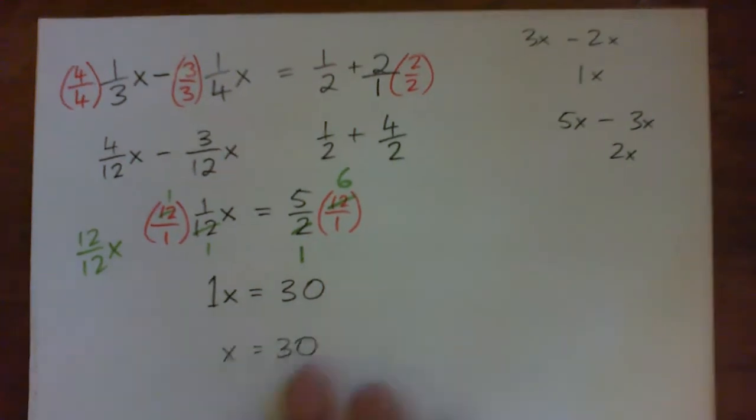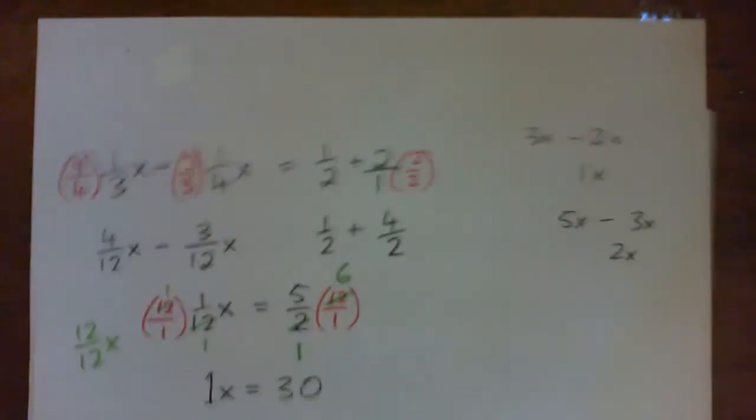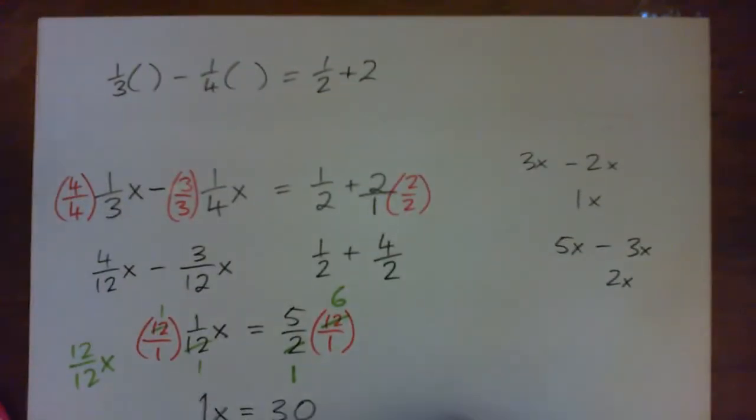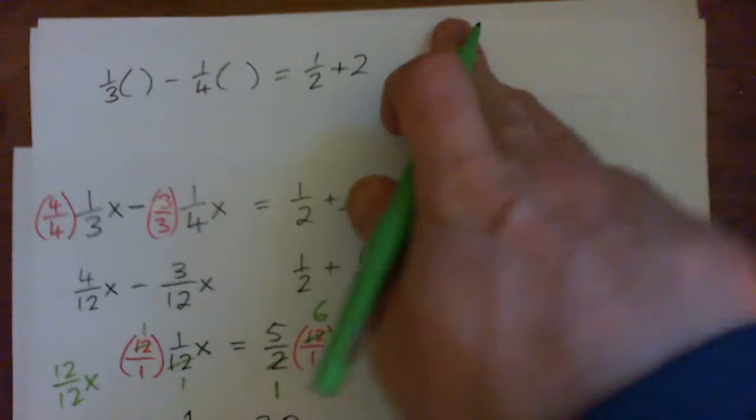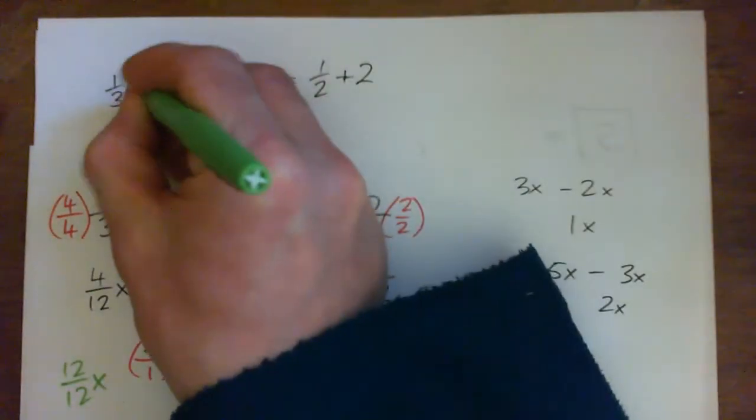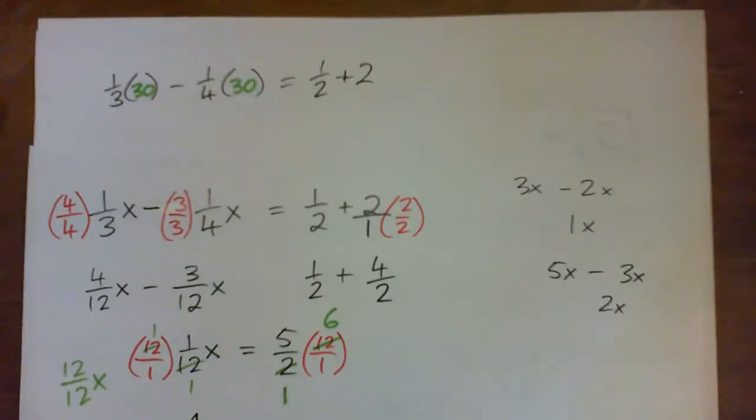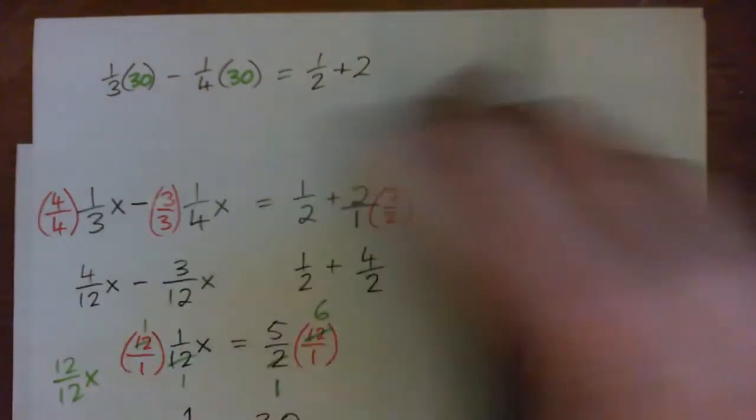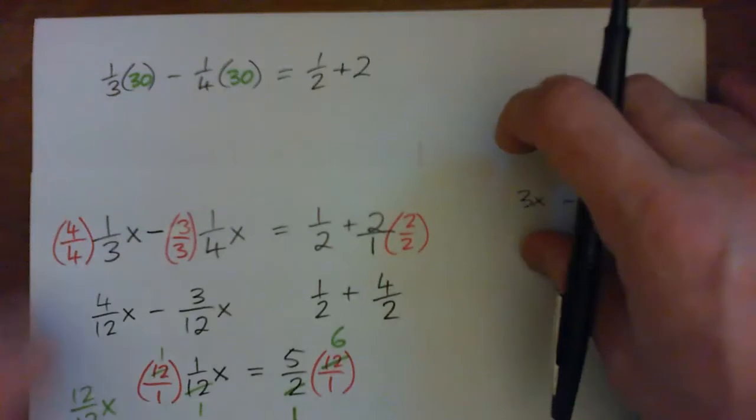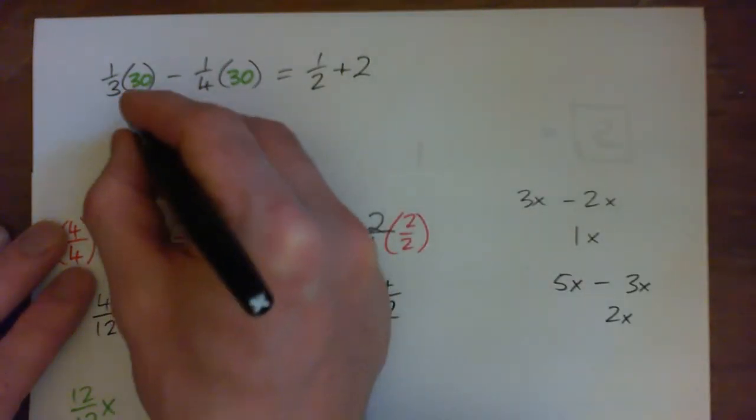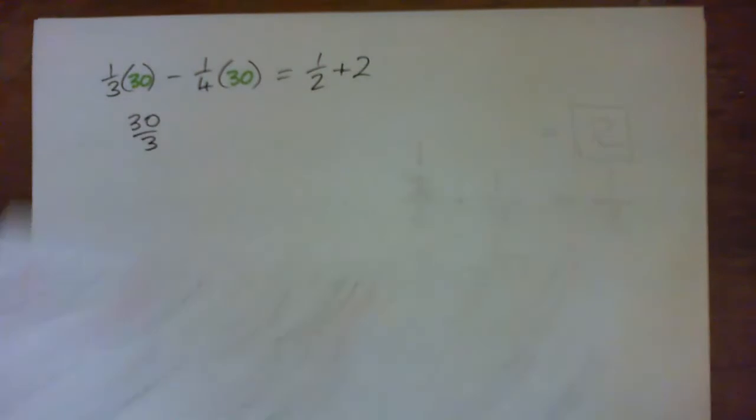If we go back to checking it, what we said from the outset is that if I plug a particular number in for x in the original equation, then both sides will be the same. A third times thirty is thirty over three which is ten. This is thirty over one times a quarter, that's thirty over four.